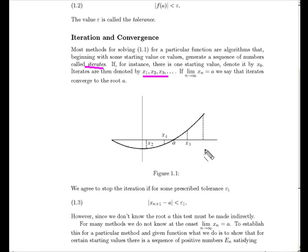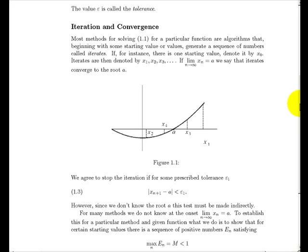And in this particular example, you can see the iterates. Here's the function, and here's the iterate x1, x2, x3, x4. And what we'll do is agree to stop the iteration if the n plus first iterate is within epsilon of the root. Now, the problem that we have here is that we don't know the root. So this direct comparison here simply is not going to allow us to make any realistic computations. So we have to think of something more indirect than that.